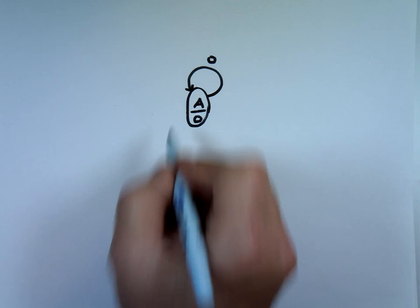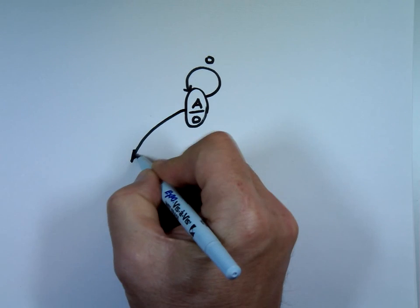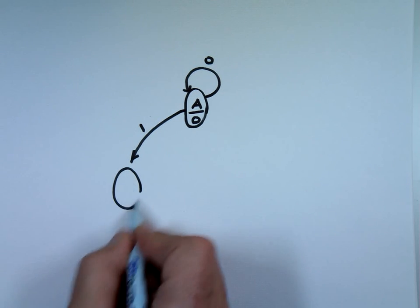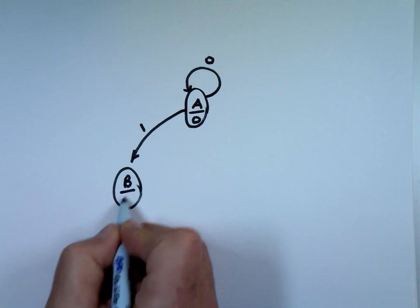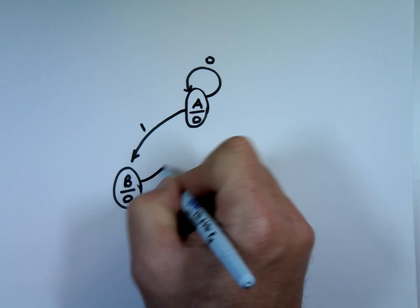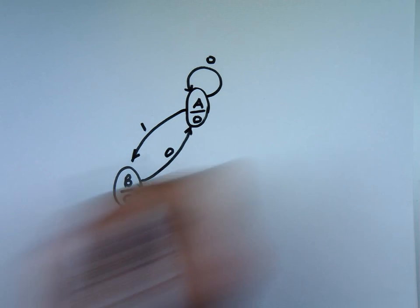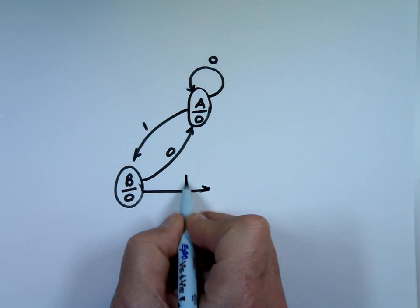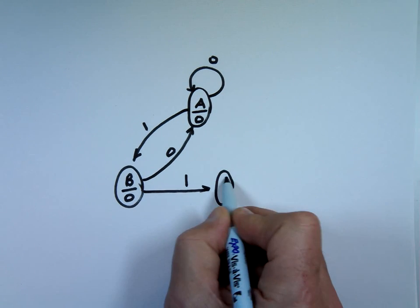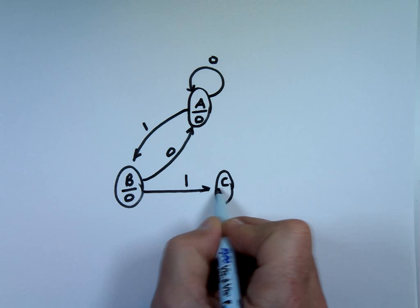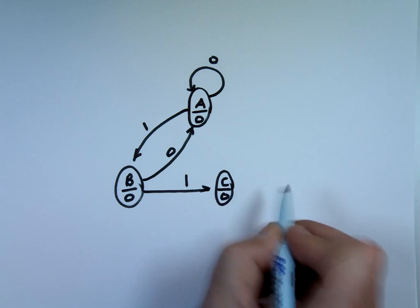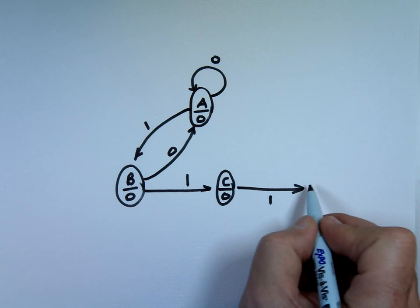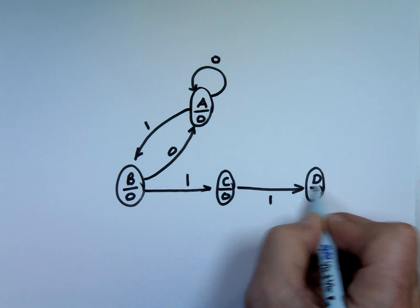That's zero. If the value is one, we're going to go to state B. And if you hear the value is zero, you go back here. If the value is one, you go right here. C over zero. If it's one, D over one.